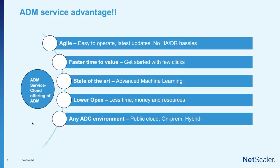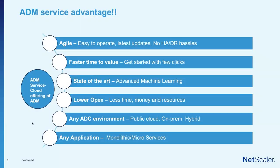When we say ADC infrastructure, it gives you the flexibility of managing any type of ADC environment — whether it is public cloud hosted over AWS, Azure, GCP, VMware — all those public clouds are supported, along with on-prem, or hybrid mixing public cloud and on-prem ADCs. It supports all the form factors currently available from NetScaler, and pretty much any application, whether monolith or microservices.